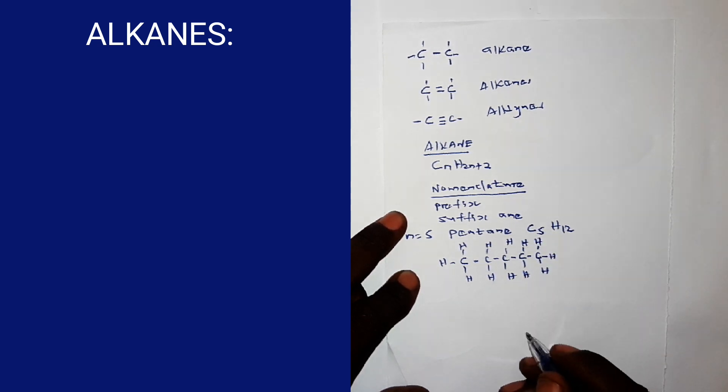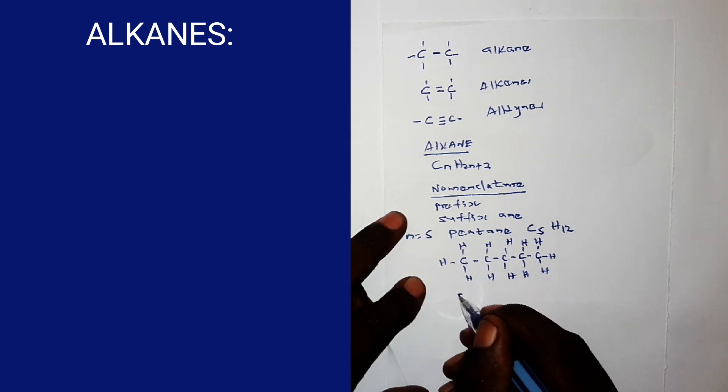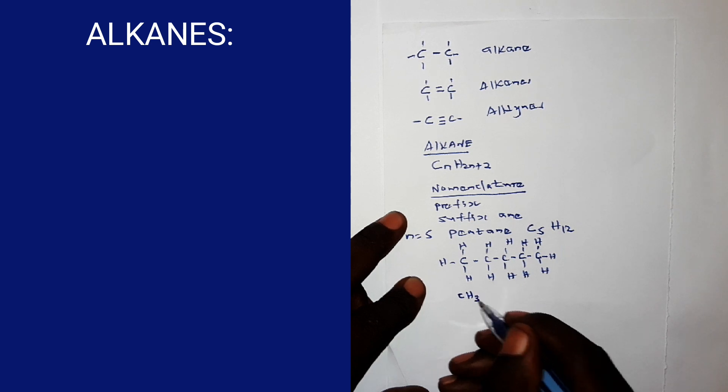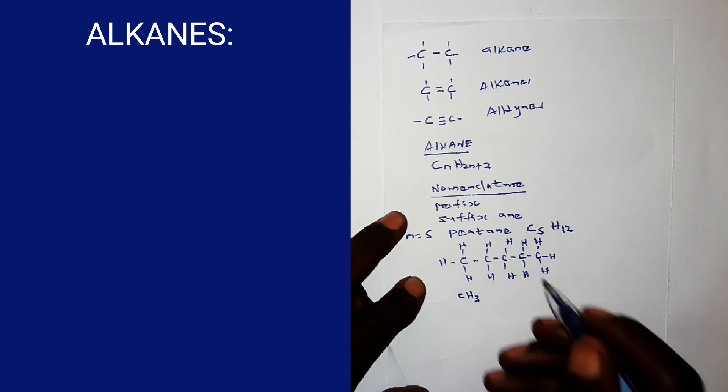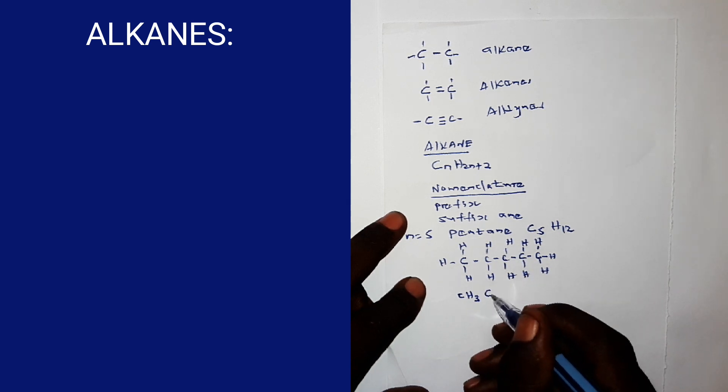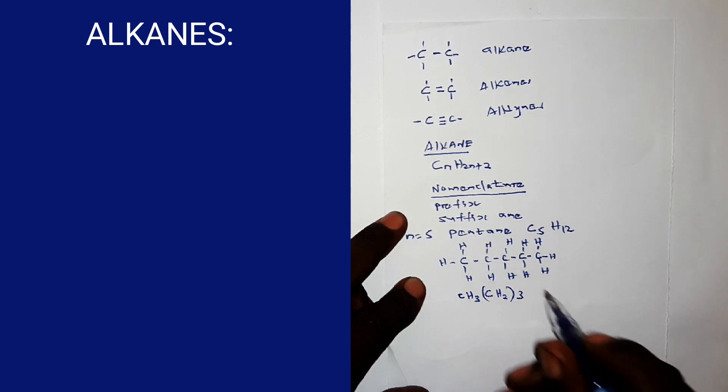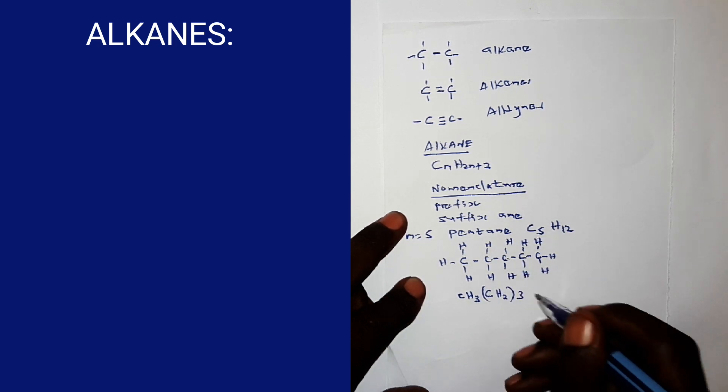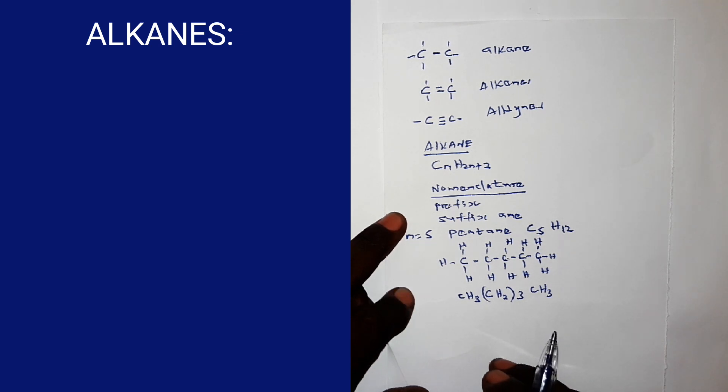That is called open structural formula. Now, to draw the condensed structural formula, you take this first carbon atom. It has got three hydrogen atoms. Then, the next one has got two. The next one is two. The next one is two. So, you can combine all the two, say, CH2 bracket three, because they are three. One, two, three. Then, the last one is CH3. That is condensed structural formula.